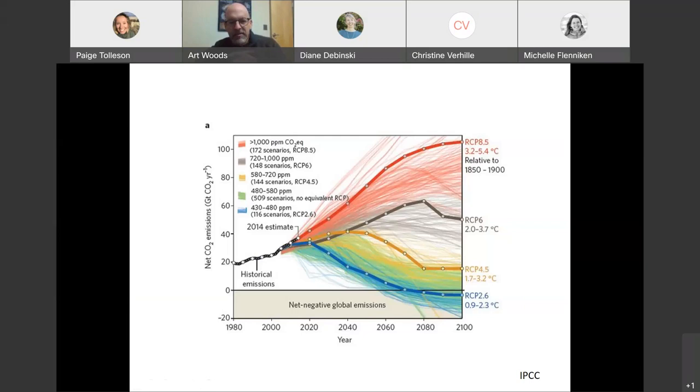I want to start out in maybe what is now a fairly standard way of introducing talks about temperature, and that is to point out the reality of climate change, the ongoing problem of carbon emissions into the atmosphere. These are different IPCC scenarios that range from really bad, this RCP 8.5, to national action to try to stem carbon emissions from economic activity.